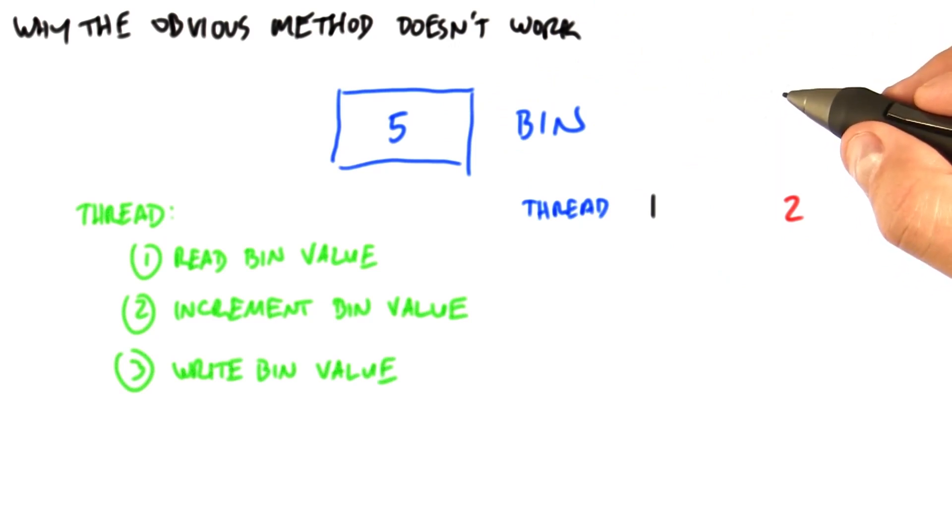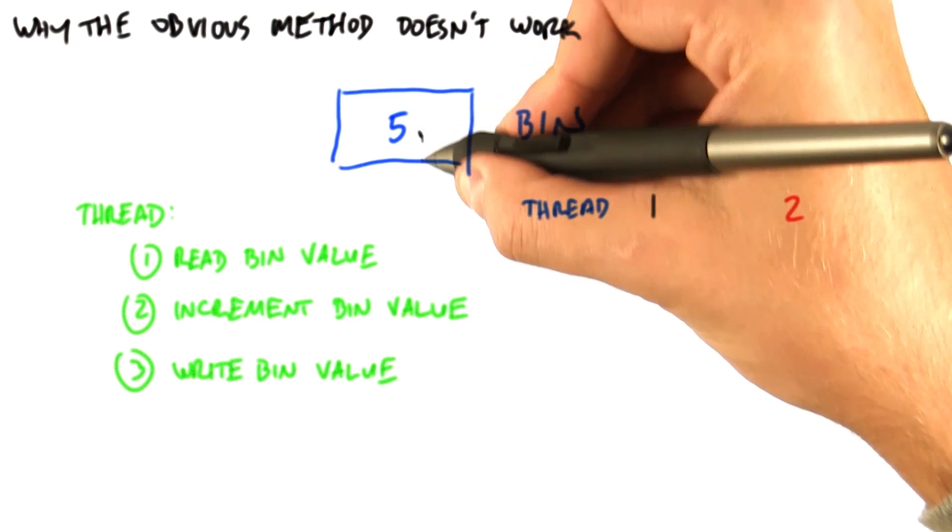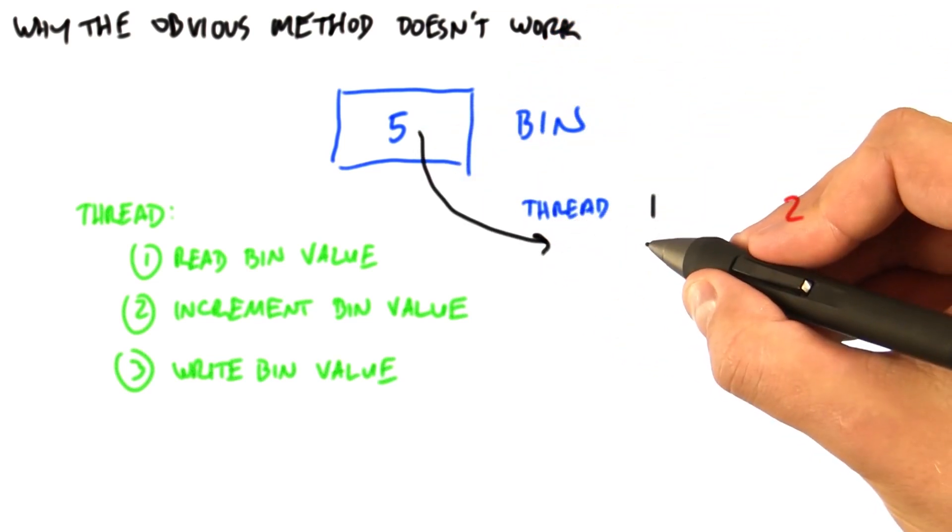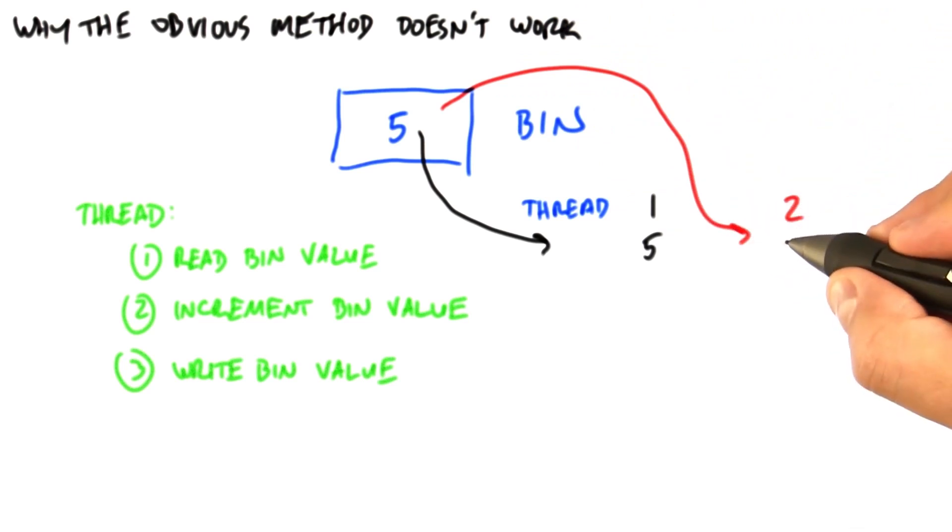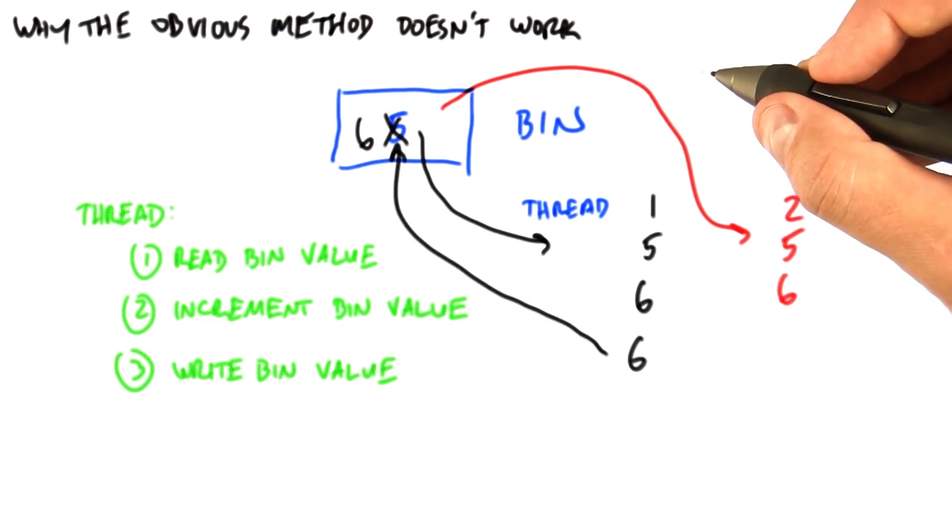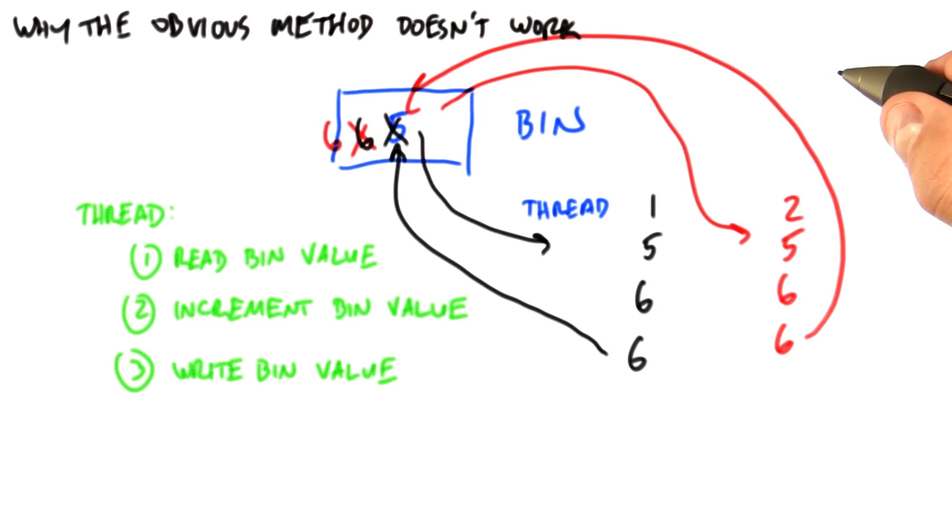The first reads the value of the bin into its local register. Then the second reads the value of the bin into its local register. Both increment the value in their own local registers. Then the first writes its value back to global memory, storing a 6. And the second does the same, also a 6. Now we've got a problem since we'd really like the answer 7.